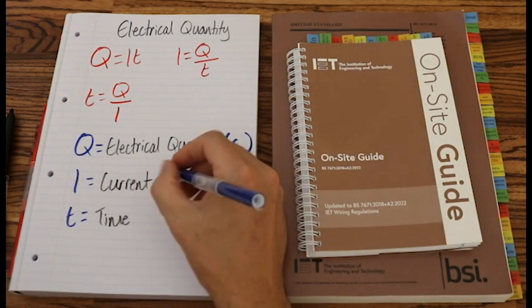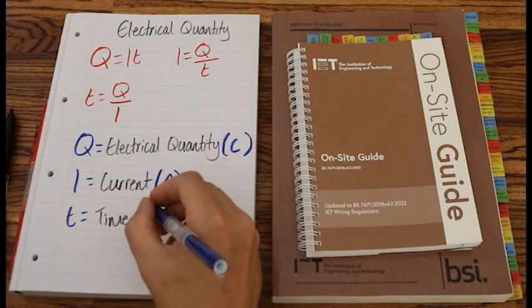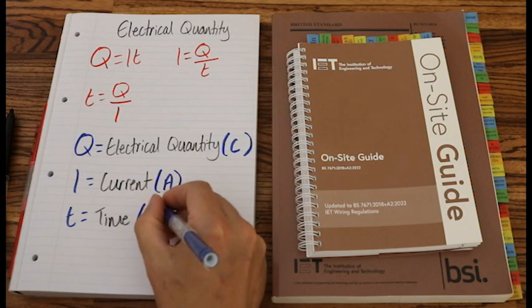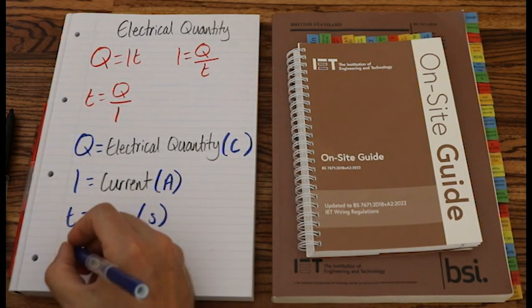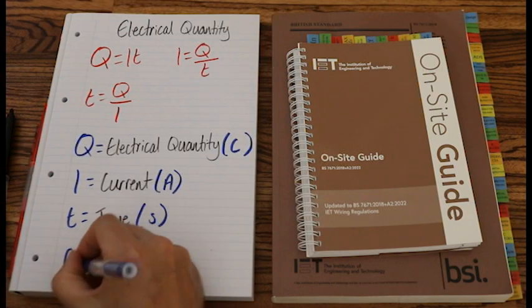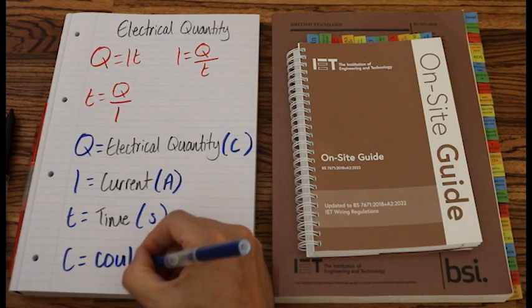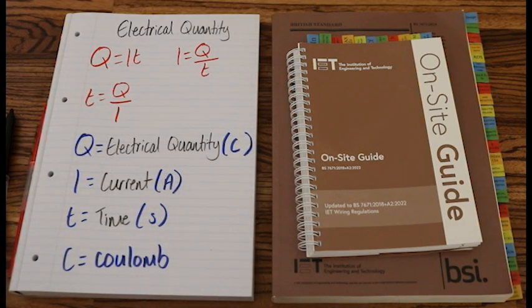And I, current, is measured in amps, capital A. And T, the SI unit for T is a lowercase s seconds. And we can write down, so if we put C equals C equals C, just so you know for your notes.